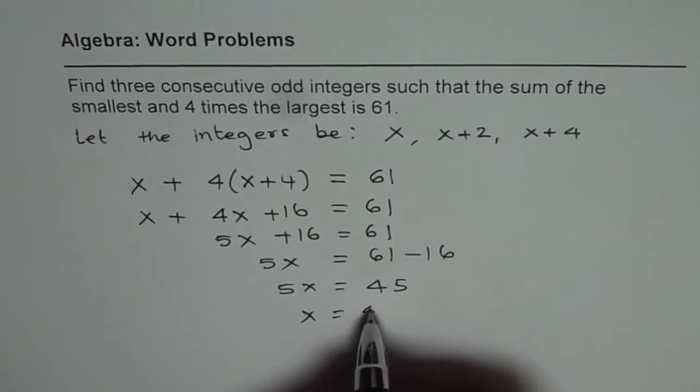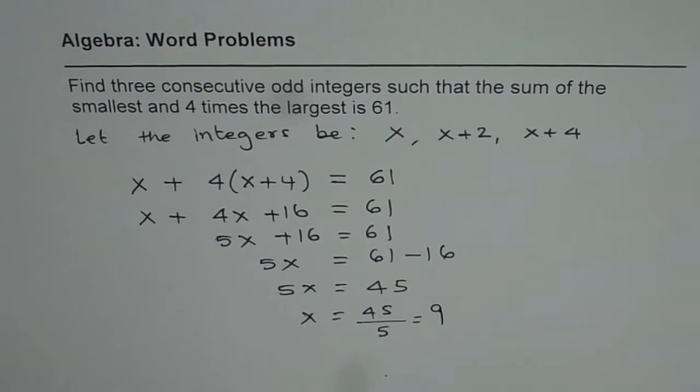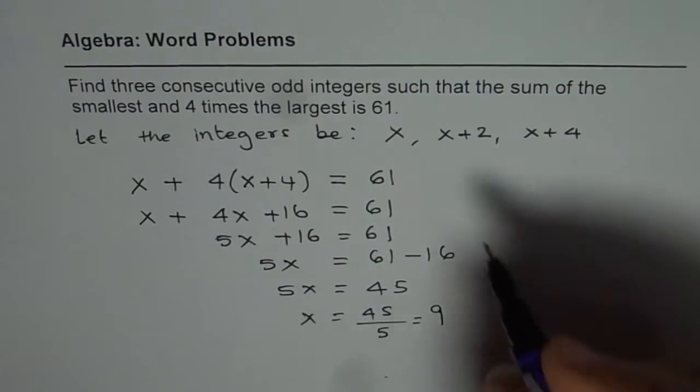Now, x is 45 divided by 5, which is 9. So we get the value of x.